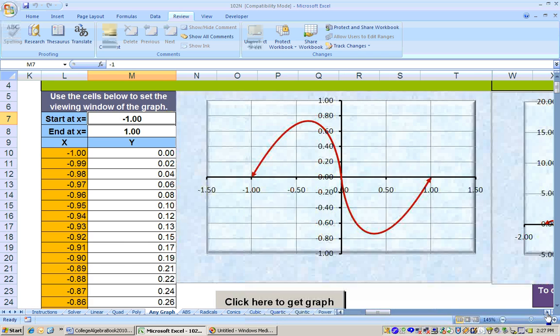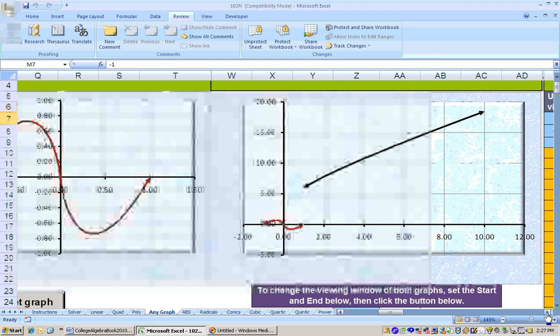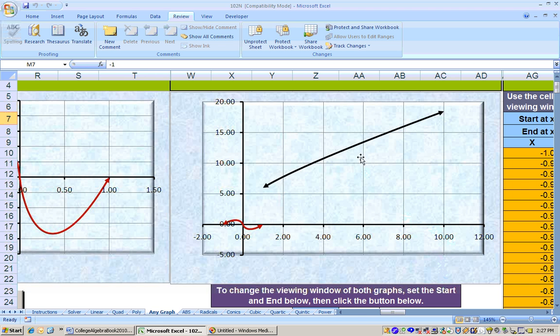And we have that graph. Pretty wild-looking graph here. Okay. Now, over here, we have both graphs. Now, I'd like to graph them over the same area, and I can see that they might intersect back here somewhere.